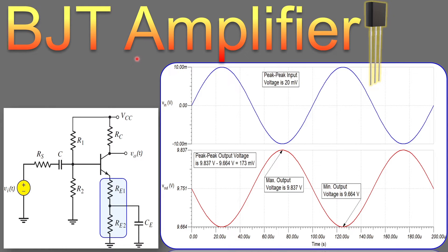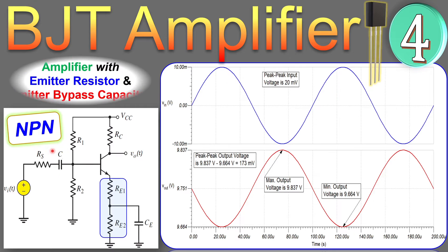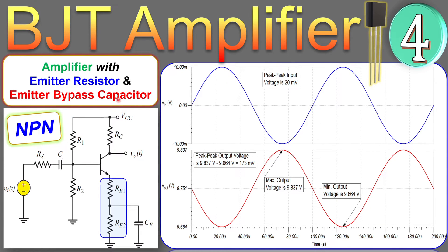Welcome to a new video about BJT amplifiers, continuing with example number four. This example is a continuation of example number three where we had a bypass capacitor. In this case, the bypass capacitor is placed across only a partial part of the emitter resistor, which will cause another interesting result in our analysis. We use the NPN to illustrate the concept.